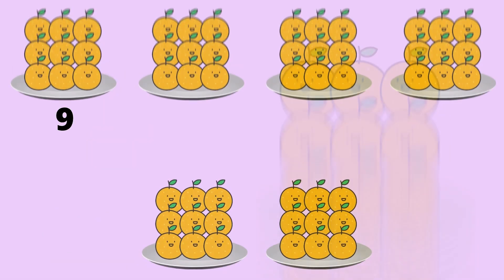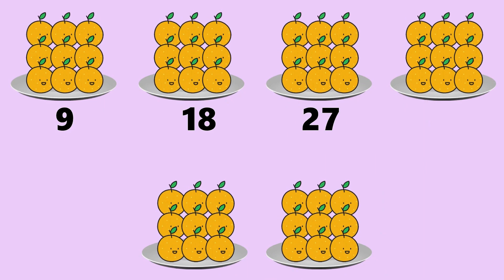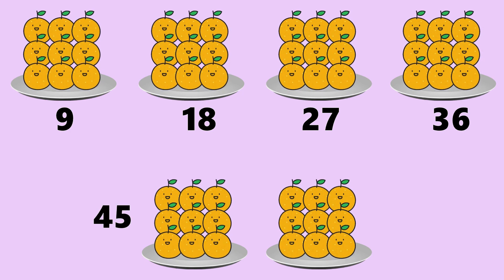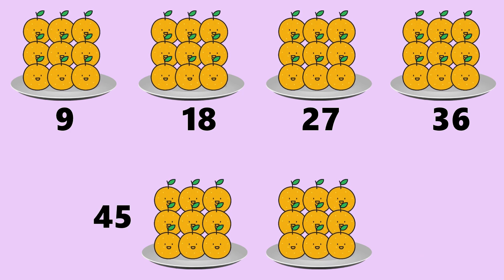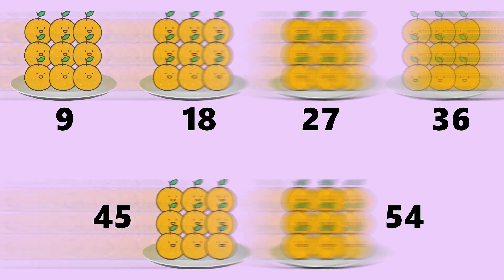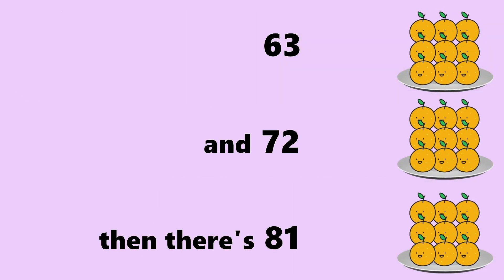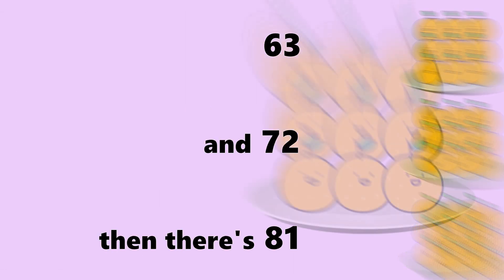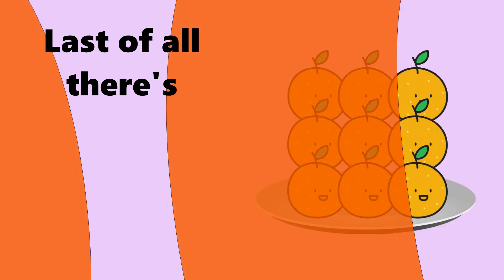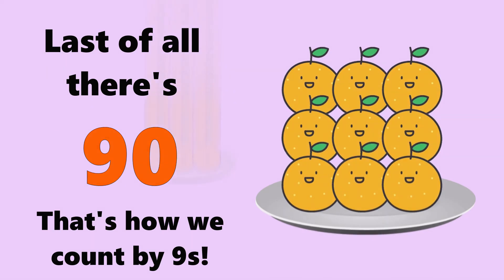Nine and eighteen, twenty-seven, thirty-six, forty-five and fifty-four, sixty-three and seventy-two, then that's eighty-one, and last of all, there's ninety. That's how we count by nines.